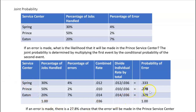That tells us that if an error is made, there's a 27.8% chance the error will be made in the Prince service center — and that's exactly what the question asked. If they asked about Eaton, we'd take the combined rate of 0.014 divided by 0.036, which equals 0.389. So if an error is made, there's actually a 38.9% chance it will be made in the Eaton service center — which makes sense, because they make so many errors while only handling a few of the jobs.